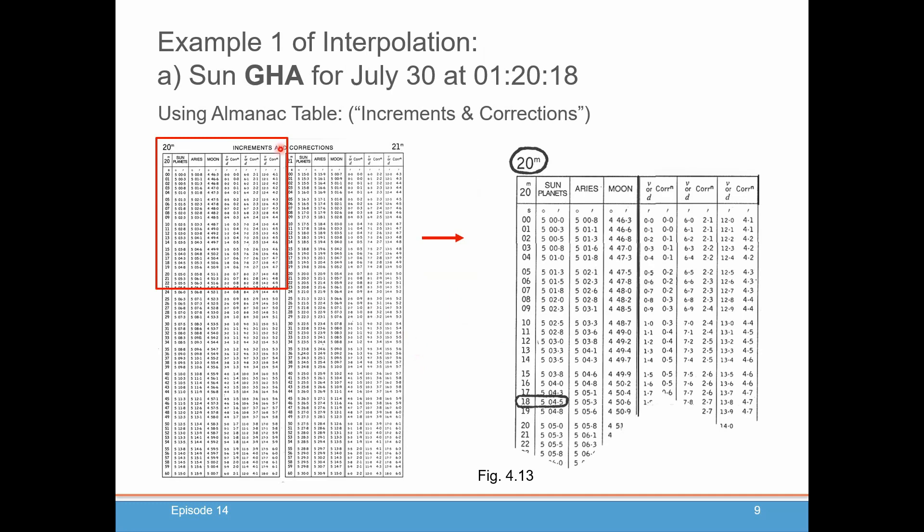What we do is we go into the part of the almanac called the increments and corrections table. Usually it's at the back of the almanac. If you get the official almanac, it'll be yellow buff colored pages, make it easier to find. You're going to go to the minutes page. On that page, you're going to see the 20-minute table. You're going to go down for your minutes, which was 18, 20 minutes. And we're going to go down here for your seconds, so 18 seconds.